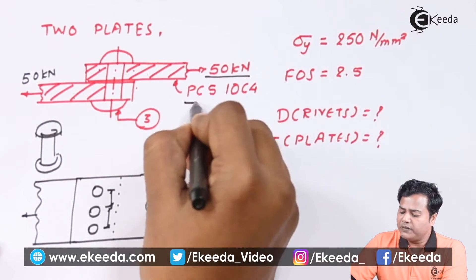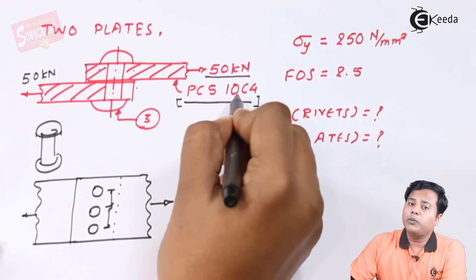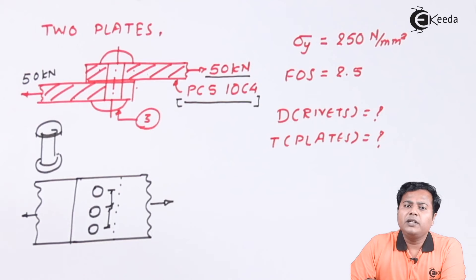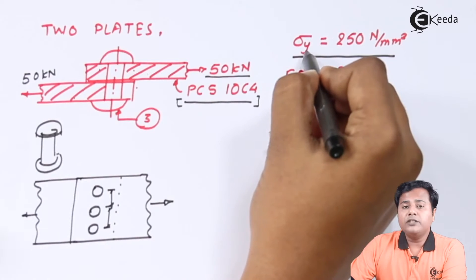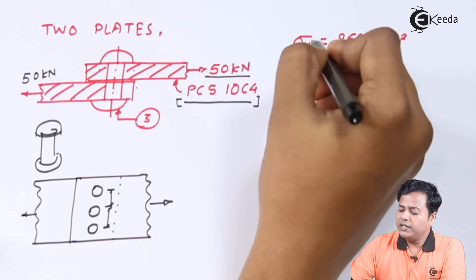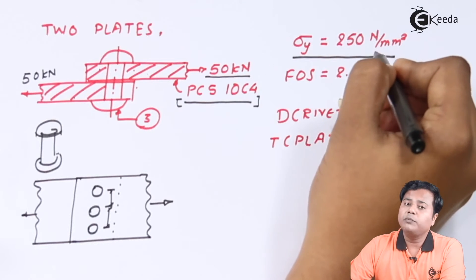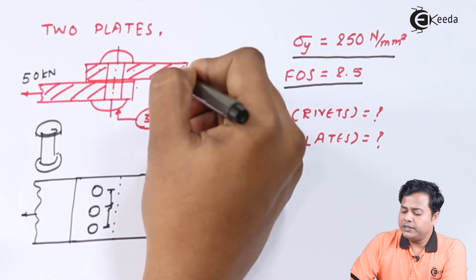We need to design them for direct stress and shear stress. The material specified is plain carbon steel 10C4. The yield strength of this material is 250 N/mm². Also, the factor of safety to maintain is 2.5, and this factor of safety is valid for both the plates and the rivets. We need to find the diameter of rivets and the thickness of the plates.